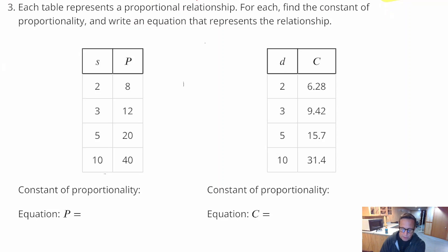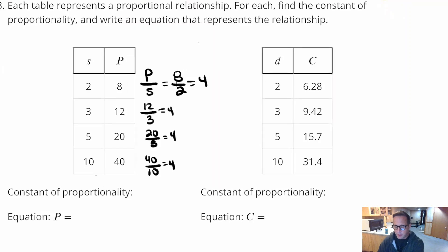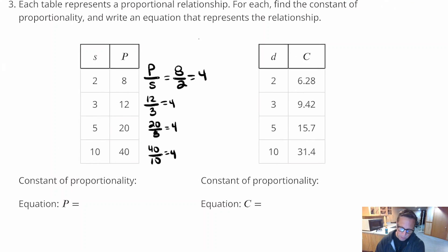And if we want extra confirmation, because that's what we're going to do. We're going to do P divided by S. Which is 8 divided by 2, which is 4. And that happens every time you take the P and divide it by the S. 12 divided by 3 is 4. 20 divided by 5 is 4. 40 divided by 10 is 4. See? Constant of proportionality right there. You've got the same one every time.